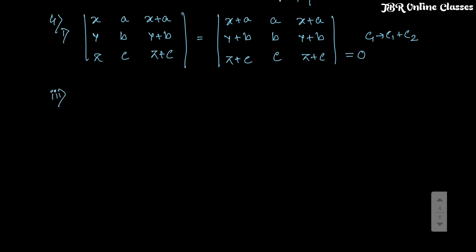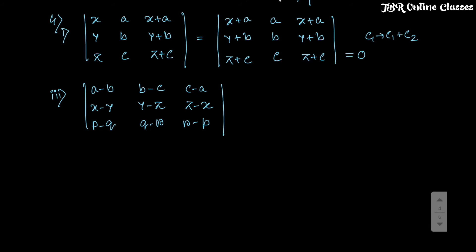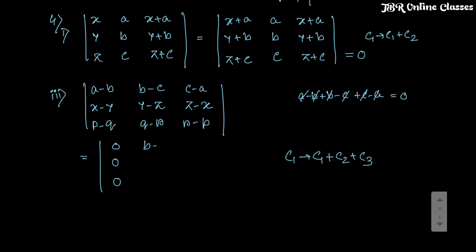Problem 43: find the value of the determinant with rows (a-b), (b-c), (c-a) / (x-y), (y-z), (z-x) / (p-q), (q-r), (r-p). Apply C1 → C1 + C2 + C3: for the first row, (a-b)+(b-c)+(c-a) = 0; similarly for rows 2 and 3 they all equal 0. So the entire first column becomes zero.